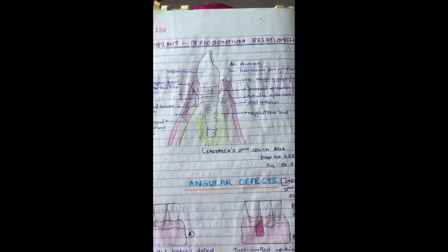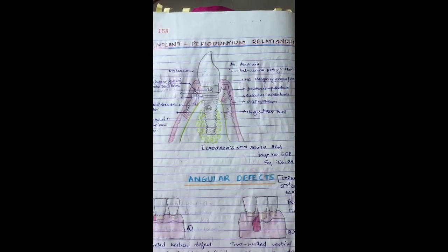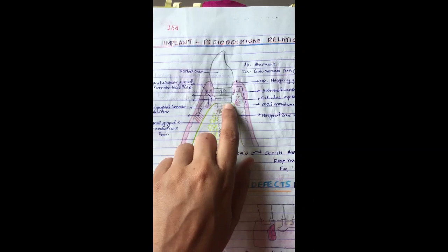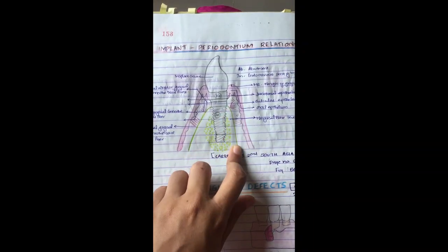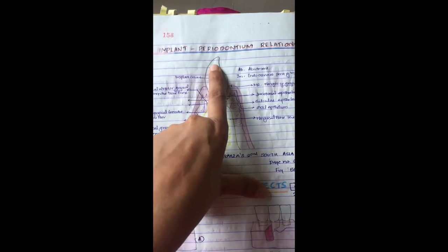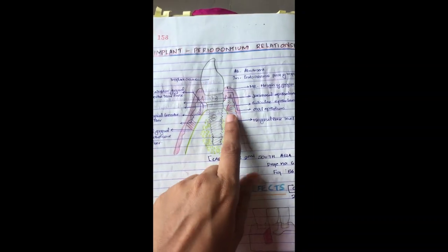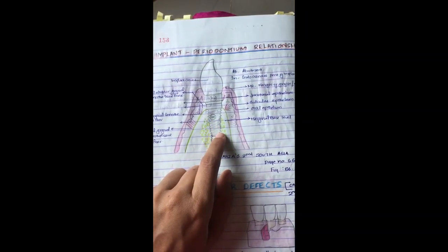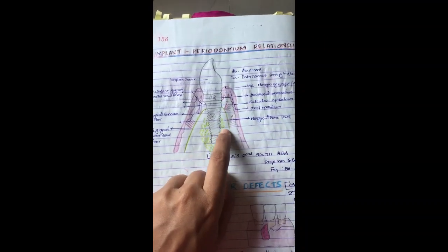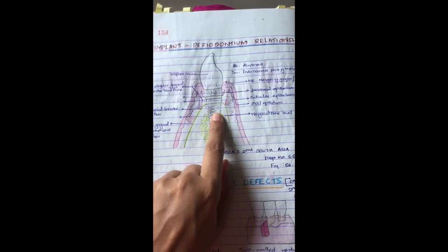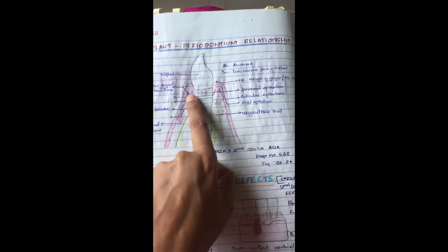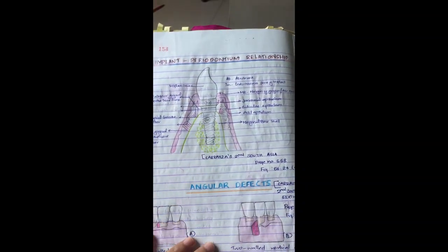This very important diagram is the implant periodontium relationship, on page number 668. This is the implant, this is the alveolar bone, and this is the implant crown. The implant does not have any periodontal ligament or cementum — there is direct osseointegration between the bone and the implant surface. However, it will have a junctional epithelium, sulcular epithelium, outer epithelium, and certain gingival fibers around it.